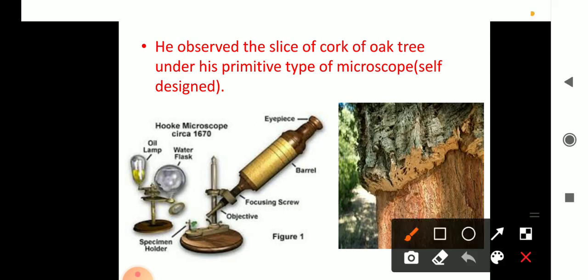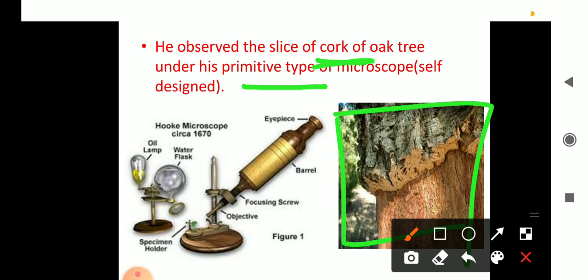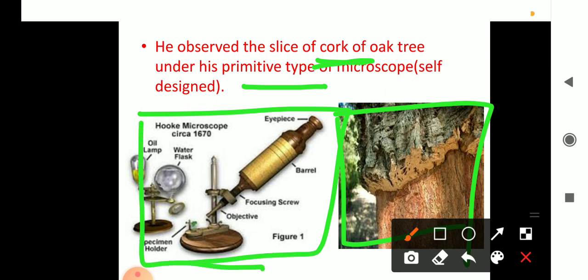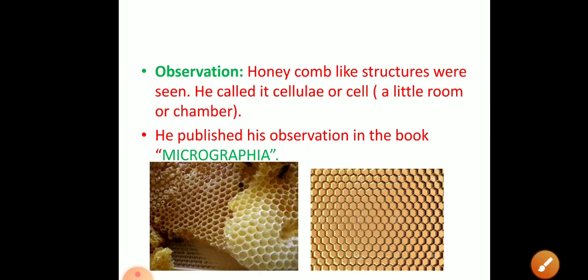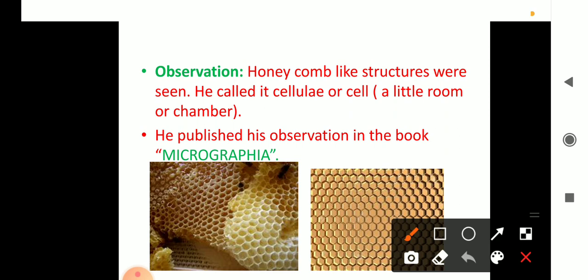You can see in this picture — this is an oak tree, this is the tree trunk, showing the bark or cork of the tree. He observed it under his primitive, self-designed microscope, which you can also see in this picture. He examined a thin slice of that cork under his microscope.